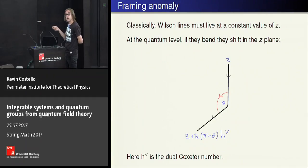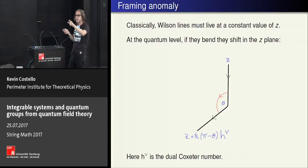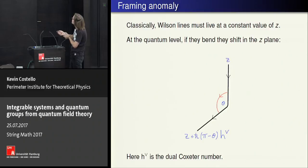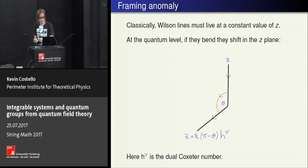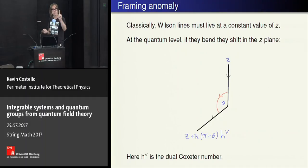One way in which the framing anomaly is manifest is that at the quantum level, if I try to have a bent Wilson line at a fixed value of z, it's anomalous. But this anomaly can be cancelled by making it shift in the holomorphic plane. If it deviates from being straight by some angle π − θ, then I must shift by ℏ times (π − θ) times the dual Coxeter number of the group (times a normalization factor 1/π). People who like TFT will immediately recognize this as the familiar feature in the Yangian that the double dual of a representation is the same representation shifted by this factor.